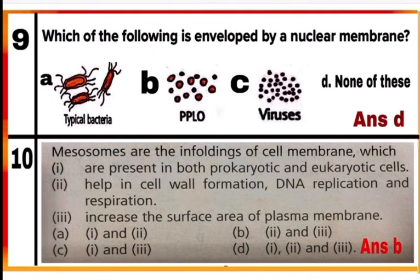Question 9: Which of the following is enveloped by a nuclear membrane? Option D — none of these. Typical bacteria, PPLO (pleuro-pneumonia-like organisms), and viruses are all prokaryotes, and their genetic material is not lined by a nuclear membrane. So the correct answer is D.